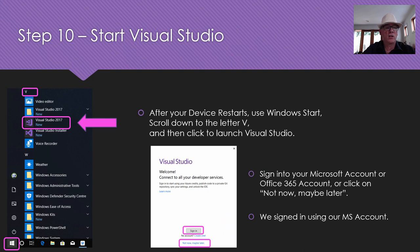Once your machine restarts, you will have Visual Studio 2017 and the installer we talked about, where you could change some options if you need to. So just go to start, click the left-hand corner icon, hit the letter V on your keyboard — it'll take you down to your V things and you've got Visual Studio 2017. Click on that.